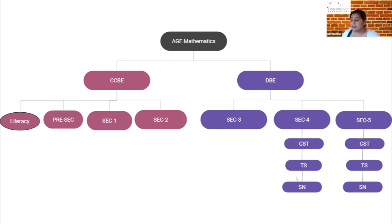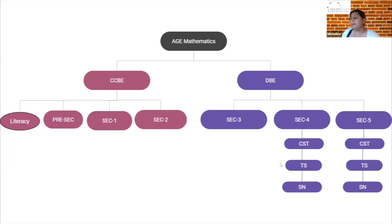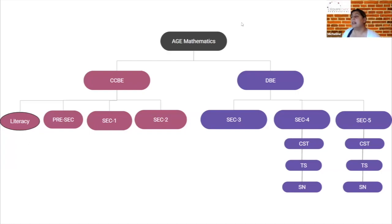When you hit the DBE, you have Secondary 3 with three modules, and Secondary 4 and 5 have three pathways: CST which is the base pathway, TS which is Technical Science, and SN which is Science Nature - the more scientifically inclined. In the adult sector, I believe only one school board teaches TS; everybody else tends to do CST and SN. Not everybody teaches literacy or pre-secondary either - it depends on the school board, the center, and student demand.